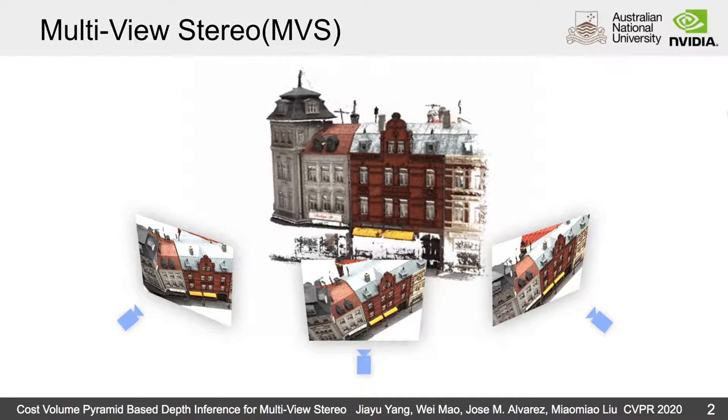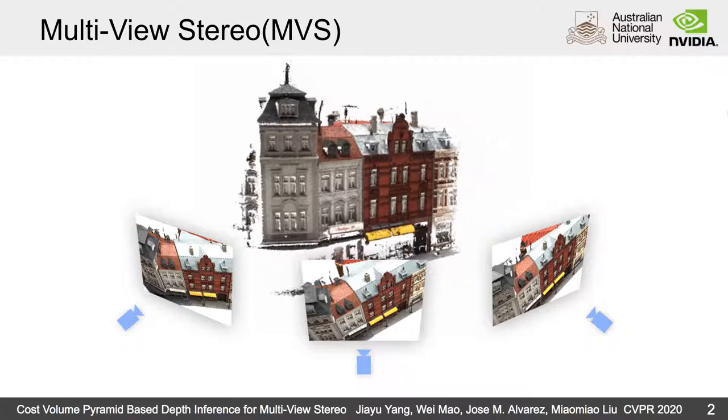Multiview Stereo aims to reconstruct the 3D model of a scene from multiview images. It is a fundamental problem for computer vision and has many applications such as 3D reconstruction and virtual reality.